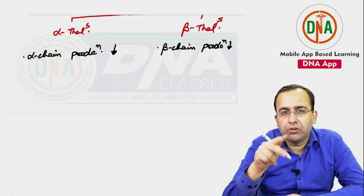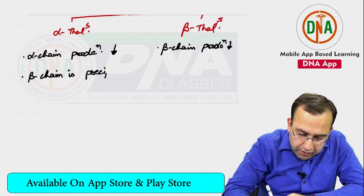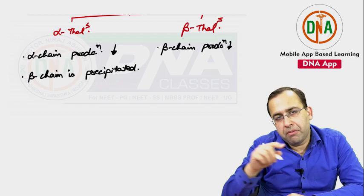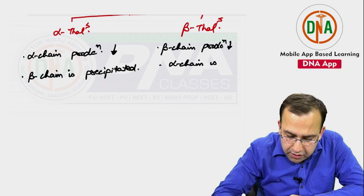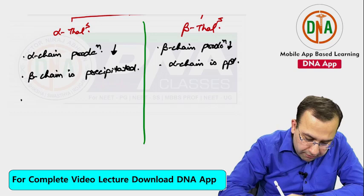The predominant hemoglobin is HbA, that is alpha-2 beta-2. So in alpha thalassemia, beta chain is in excess and therefore beta chain is precipitated. Versus beta thalassemia, in which alpha chain is precipitated.